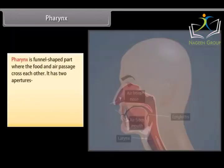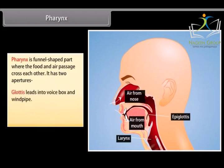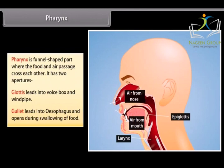The pharynx is a funnel-shaped part where the food and air passages cross each other. It has two apertures: the glottis, which leads into the voice box and windpipe, and the gullet, which leads into the esophagus and opens during swallowing of food.